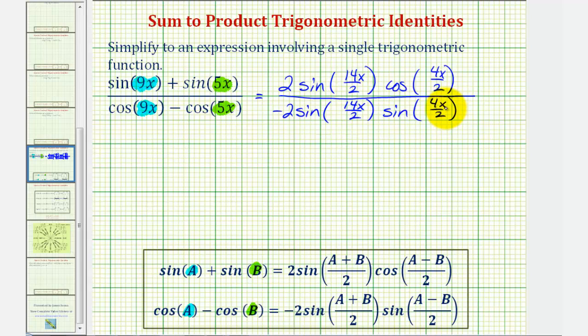Let's go ahead and simplify these angles. So we have two times sine 7x times cosine 2x divided by negative two sine 7x times sine 2x.